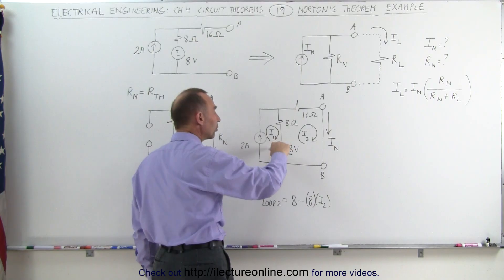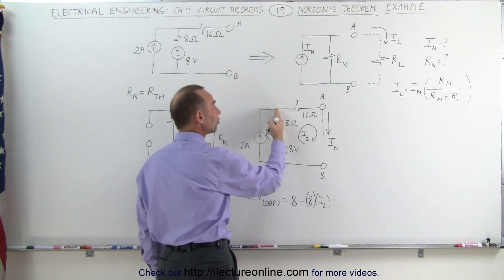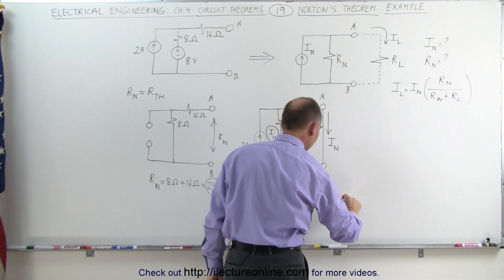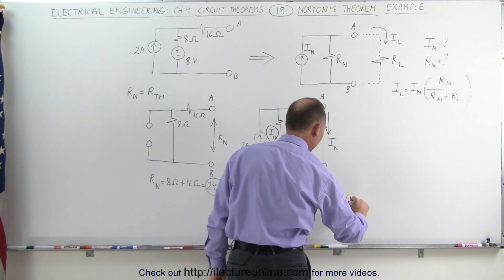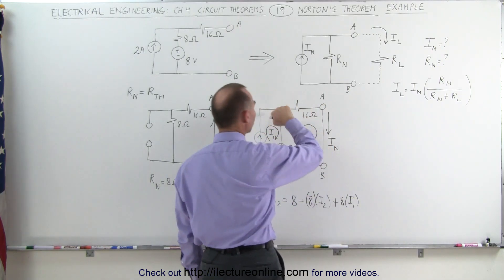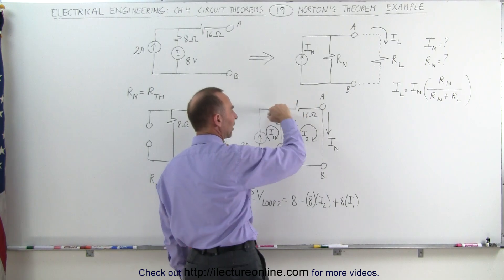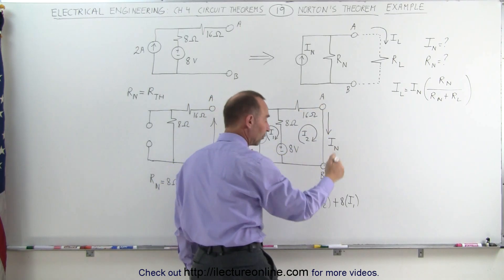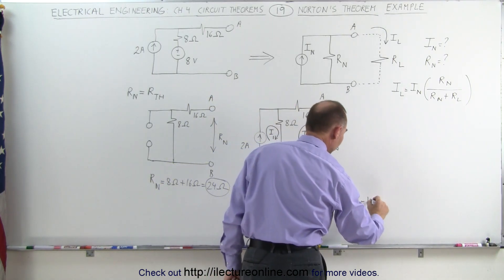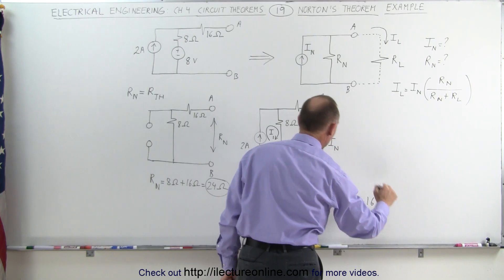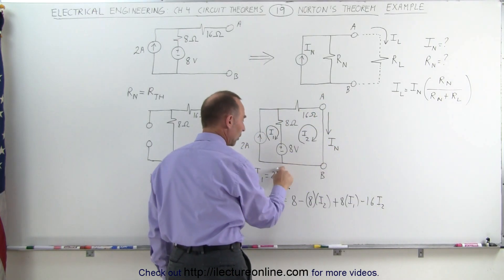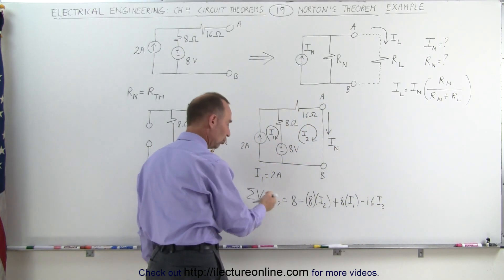which would be minus the resistance times the current I2. However, there's also an I1 current flowing here, and we're going against the current, against I1, that's a voltage rise, plus 8 ohms times I1. Then going around the corner, we go across this resistor, that's with the current I2, therefore that's a voltage drop, minus 16 times I2. And then we go all the way around, get back to where we started, that adds up to 0.